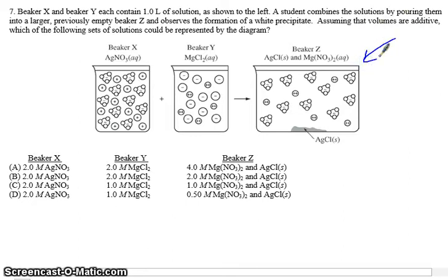And observes the formation of a white precipitate. In this case, our white precipitate is that same silver chloride we just have seen. So the reaction is actually the same. The net ionic equation is the same. Our second substance is now magnesium chloride with Cl2, which will be different from the sodium chloride we had above. Assuming that the volumes are additive, which of the following solutions could be represented by the diagram?